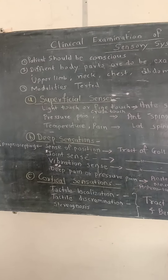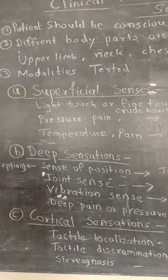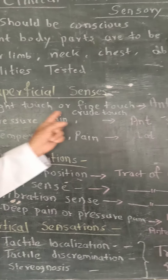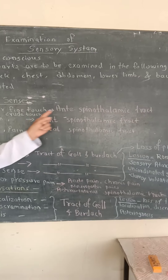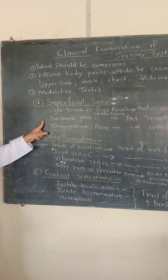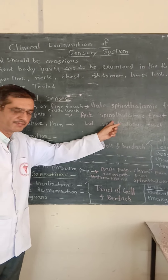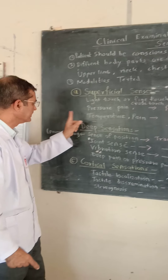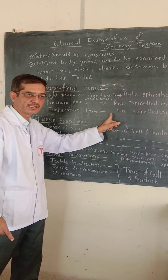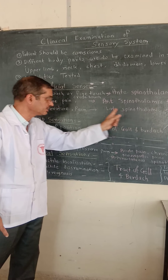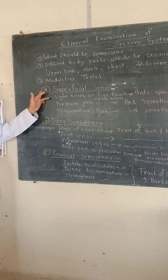To summarize, superficial sensations — which we have finished — include: light touch or fine touch or crude touch, carried by the anterior spinothalamic tract; pressure pain, carried by the anterior spinothalamic tract; and temperature pain, carried by the lateral spinothalamic tract. All three come under superficial sensations.